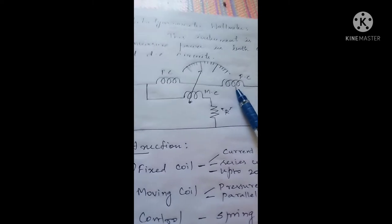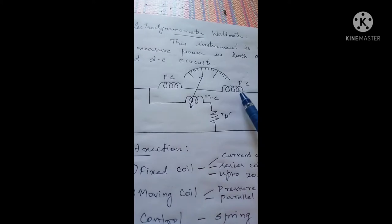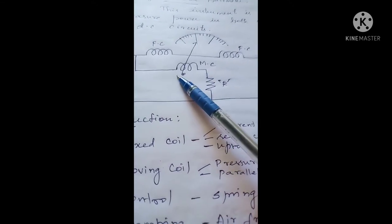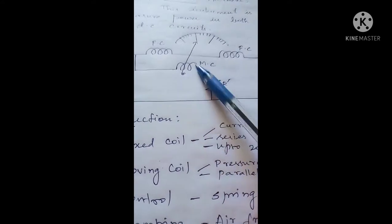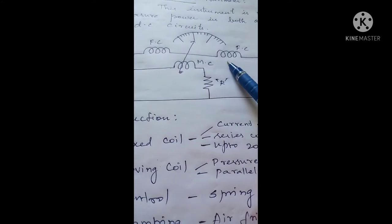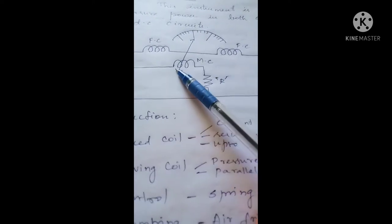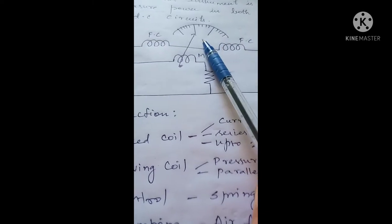The current or voltage is passed through the fixed coil, which makes it act as an electromagnet. When we pass current through the fixed coil arrangement, that develops a magnetic effect. When the moving coil arrangement is placed in between this magnetic field, a force develops on the moving system.